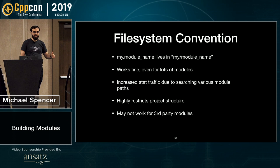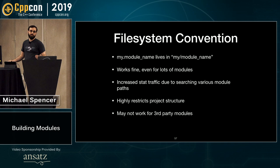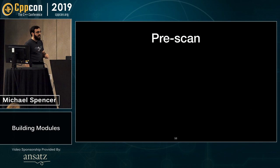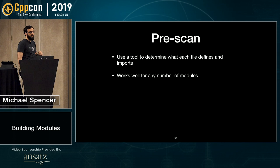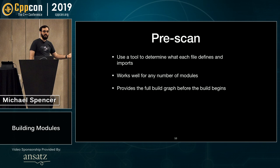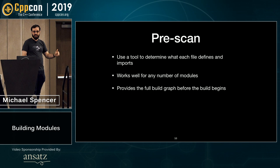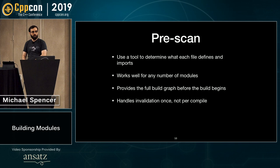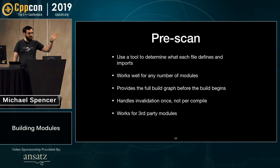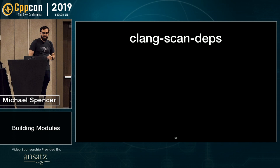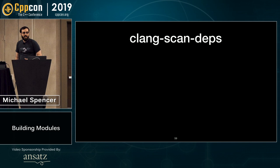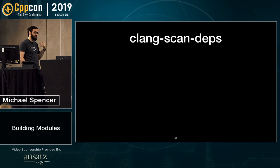A pre-scan works well for any number of modules. It provides the full build graph before the build begins, so we can follow the critical path and optimally schedule. It handles invalidation once, not per compile, and works great for third-party modules. For performance, we have Clang Scandeps — we've been working on it at Apple. Alex and I gave a talk at LLVM Euro with details on the implementation. Clang Scandeps is a pre-scan tool for explicit modules. Given a compilation database — a list of compilation steps with all command line flags — it returns a module build graph.